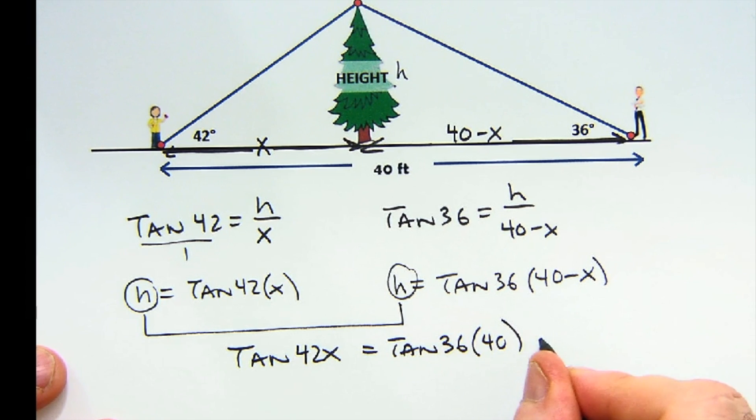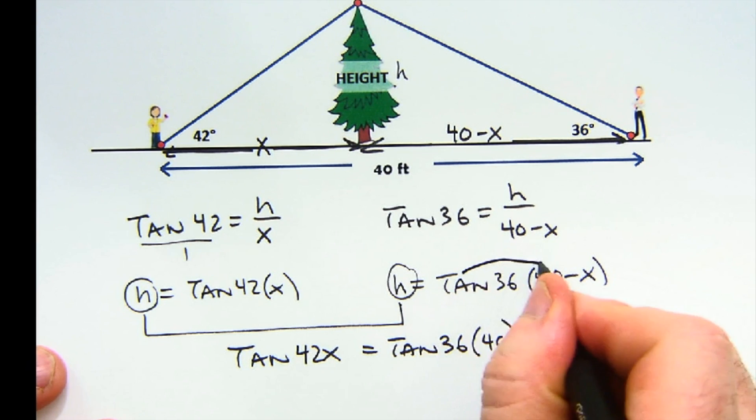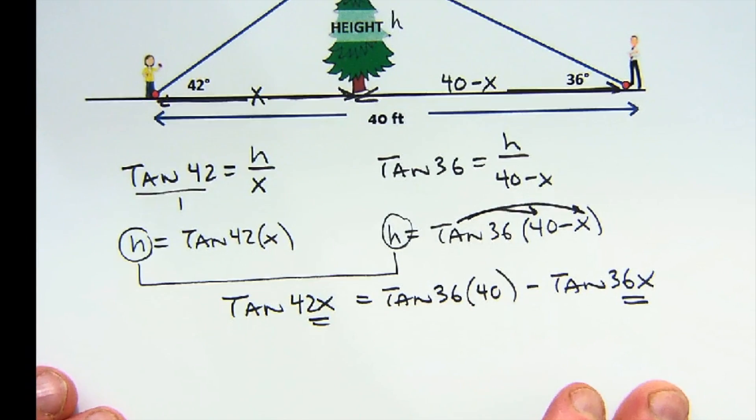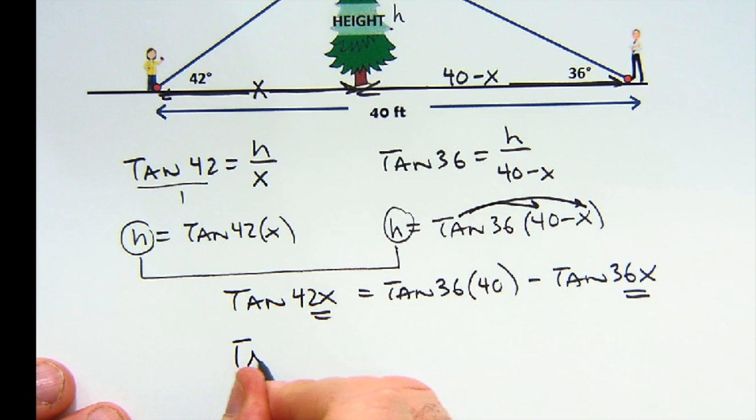Now notice I have x's here and x's here. I'm going to gather them in a minute. I'm going to turn these all to decimals so you can see it. For now, I just think it's just as easy not to. So I'm going to bring this over, which should become positive: the tangent of 36 times x equals the tangent of 36 times 40.